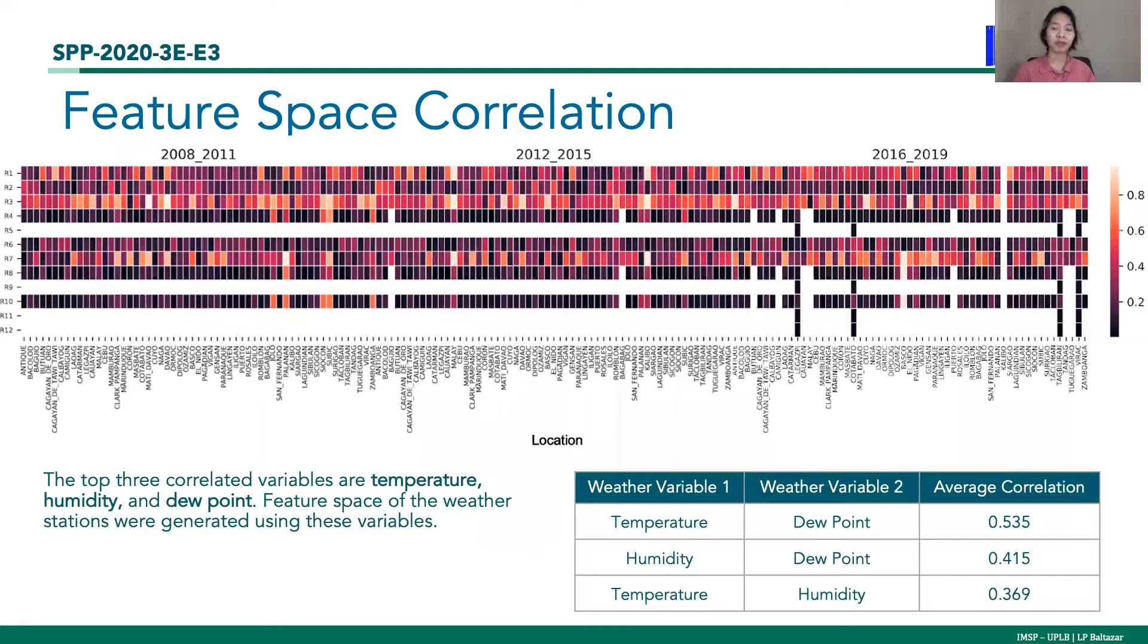Shown in the figure is a heat map of the correlation of different combinations of two weather variables. The top three correlated variables are temperature, humidity, and dew point. These variables were used to generate the feature space.